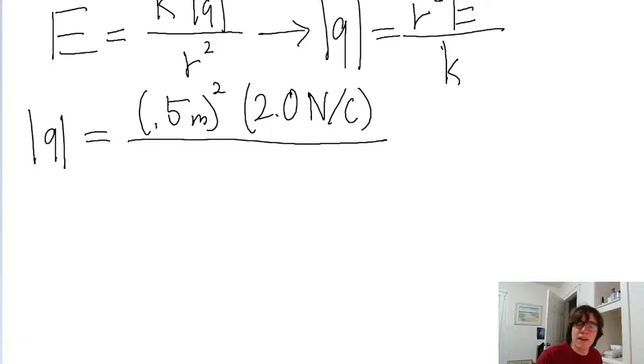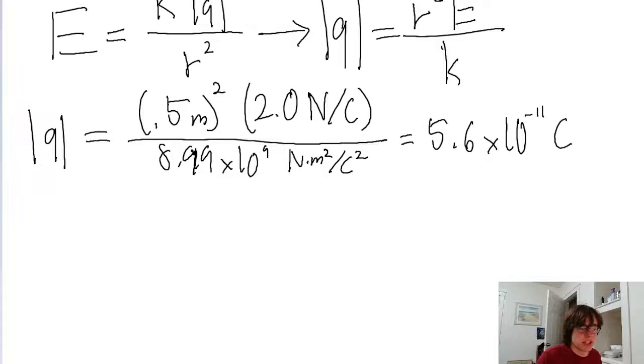This is divided by the Coulomb constant, which is 8.99 times 10 to the power of 9 newton meters squared per coulomb squared. And if we put that into a calculator, we find a charge magnitude of about 5.6 times 10 to the power of negative 11 coulombs.